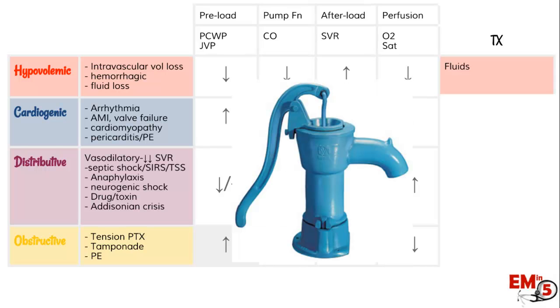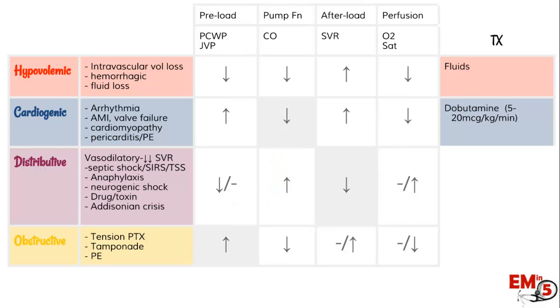For patients who have poor pump function — cardiogenic shock — their treatment is going to be inotropes. Specifically, dobutamine is a great thing to start with in the ER.